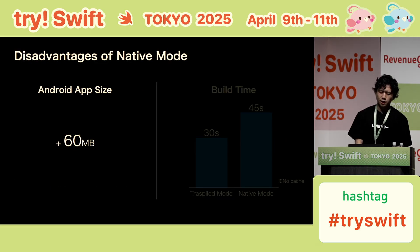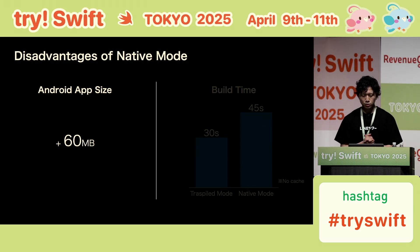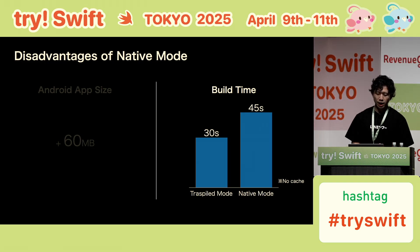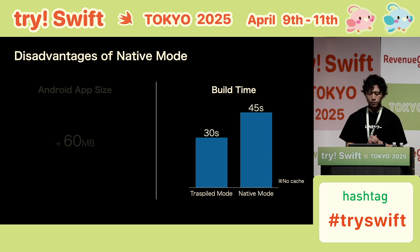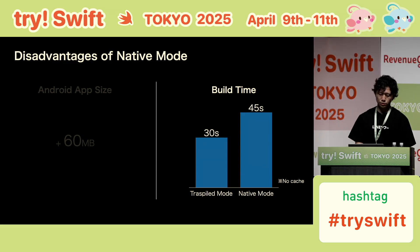But native mode also has disadvantages. For instance, Android app size can increase by about 60 megabytes. And build time may also increase. In my app, there was about a 50-second difference between transpile mode and native mode. There are various other advantages and disadvantages, so you should choose the mode that fits your app best.